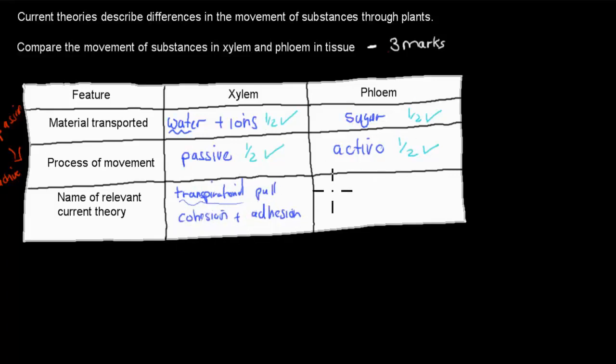For phloem, that was your translocation. So you could have written translocation, and you could also have written from source to sink, that's the way it travels. Remember source was the place where sugar is produced, source to sink, and sink was where sugar was needed.